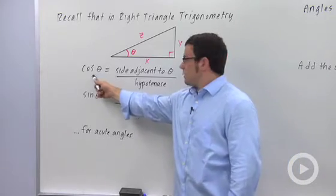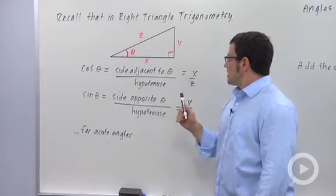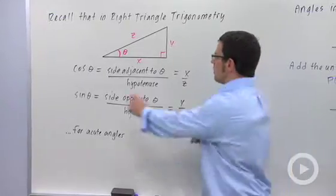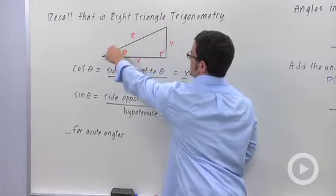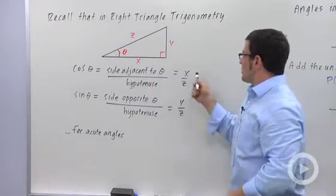We defined cosine of theta to be the side adjacent to theta divided by the hypotenuse. And by adjacent, we mean the side that's next to theta. This is the hypotenuse, the long side of the right triangle. And so that means x over z.